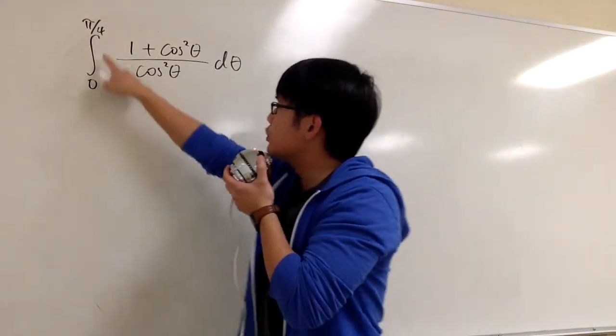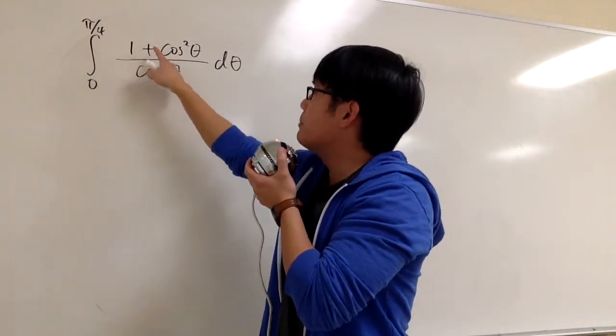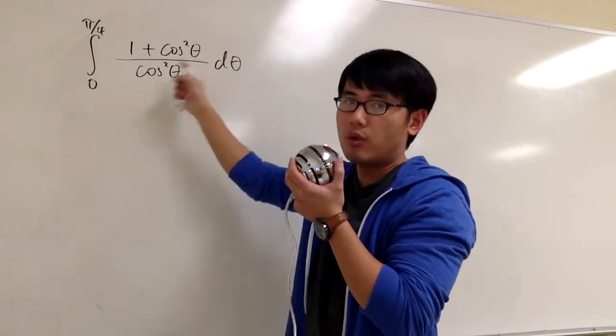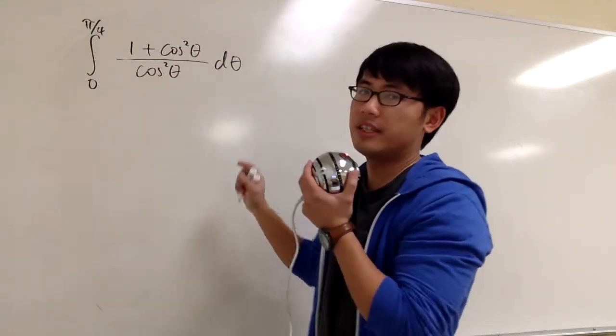This is the integral. From 0 to pi over 4, we have 1 plus cosine squared theta on the top, or over cosine squared theta on the denominator, d theta.